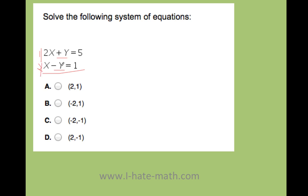2x plus y equals 5 plus x minus y equals 1. Well, look what happens. 2x plus x is going to be 3x. The y's go away. And then I have 5 plus 1, which is 6.